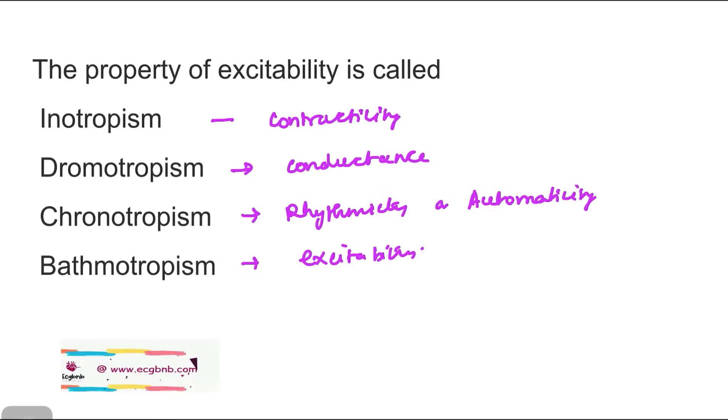For bathmotropism and dromotropism, you have to remember in some funny ways. Probably you can remember that after taking a bath, you get excited. So bathmotropism is related with excitability. And dromotropism probably you can rename it as drama. You usually conduct a drama. So conductance can be correlated with dromotropism. These are very funny ways to remember, but there is no other option. Because if you don't have any clue or mnemonic before taking these questions in the exams, definitely there is a high chance that you could get confused with the terminology and you can give a wrong answer.